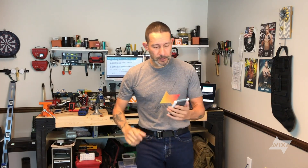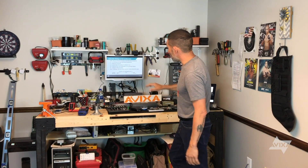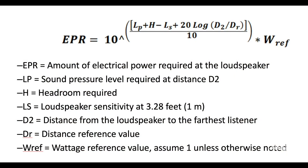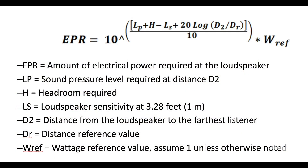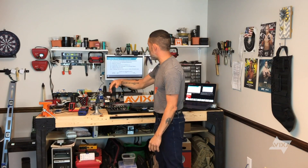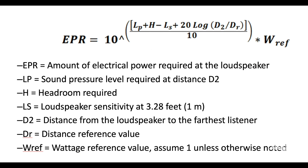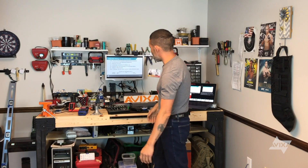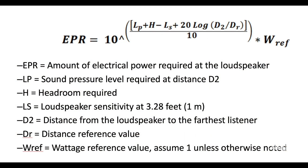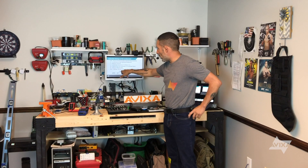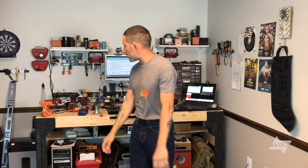That makes you think about how logarithms work — but that's a video for another day. So what we're talking about: loudspeaker wattage required. I have my sound pressure level of 71 dB, my headroom of 10 or 20 depending on your content, my loudspeaker sensitivity of 90 dB measured at one watt at one meter — 3.28 feet. Distance from the loudspeaker to my ear holes: 10-foot ceiling, four-foot ear holes, six feet of distance. Distance reference value: 3.28 feet or one meter. Wattage reference: that one watt we tested our loudspeaker at.